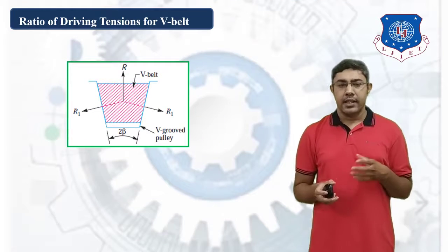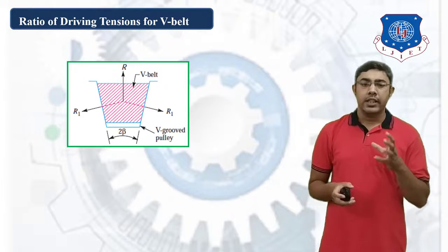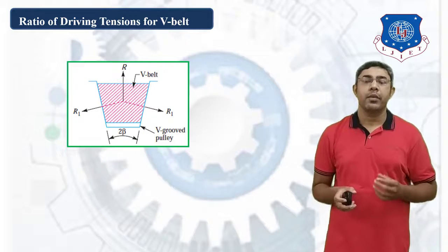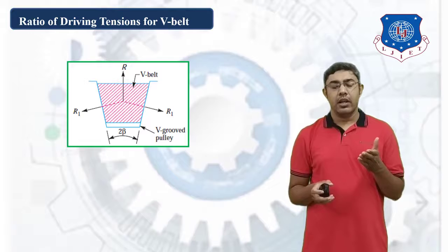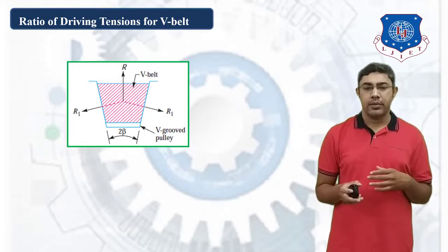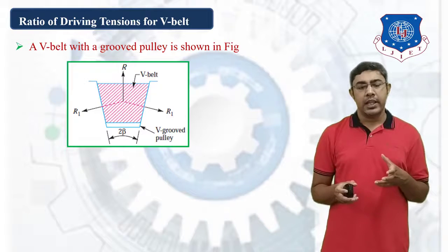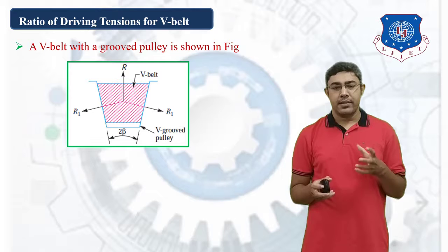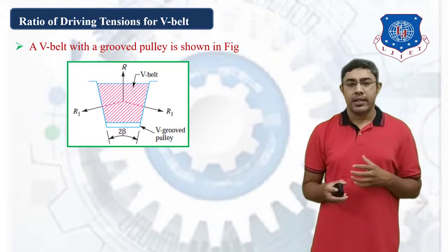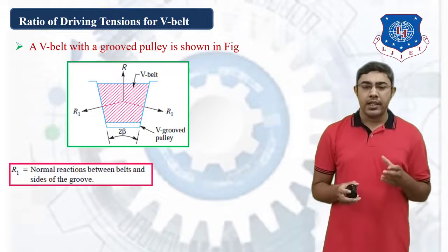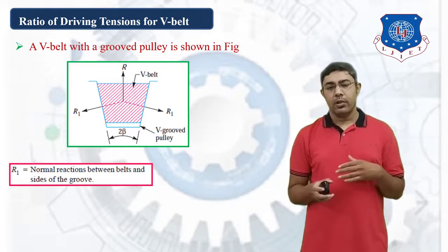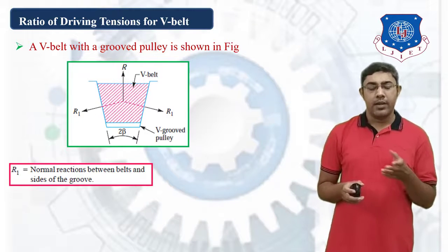Next is the ratio of driving tensions for the V-Belt. Consider the figure which shows the cross-section of V-Belt with V-groove pulley. The V-groove angle is 2-beta, and reaction forces are applied according to the configuration. R1 is the normal reaction between the belt and the sides of the groove.